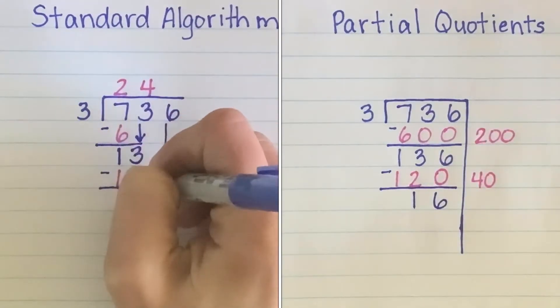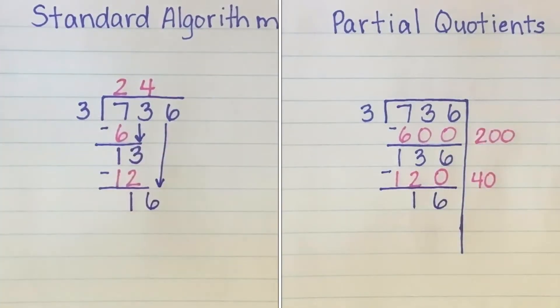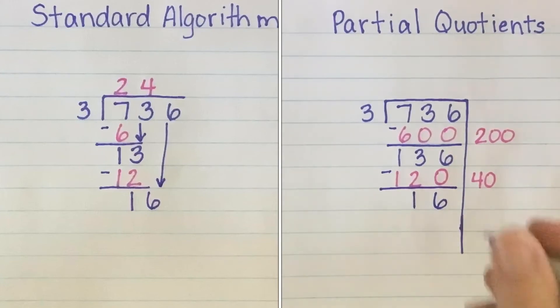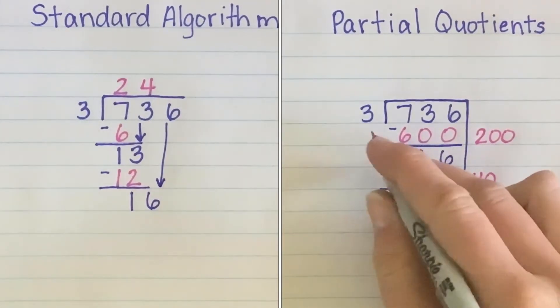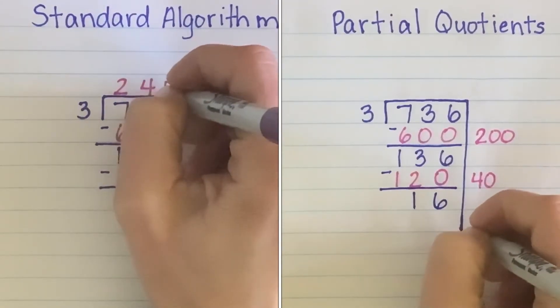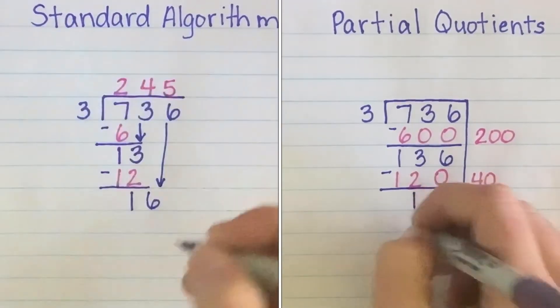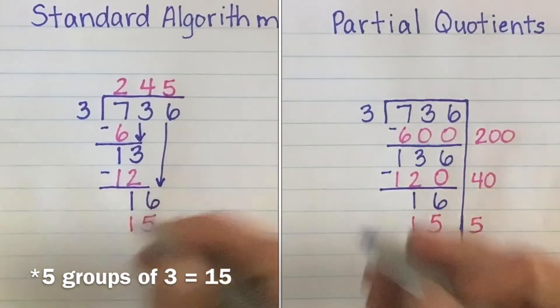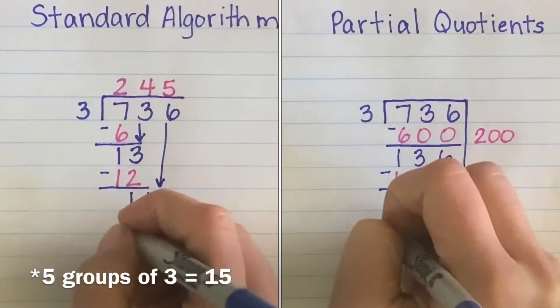The standard algorithm tells us to pull down the next digit in the dividend, which gives us 16, another dividend to divide from. At this point, both methods have the same dividend that they're taking groups of 3 from. We can use basic division facts to find how many groups of 3 we can take from 16. We can take 5 groups of 3 from 16, leaving us with 1 left over after we subtract.